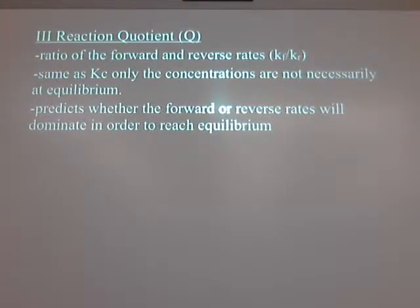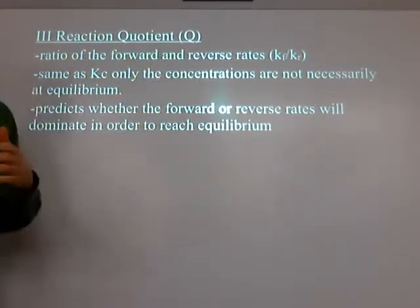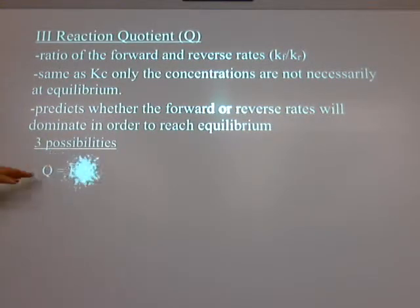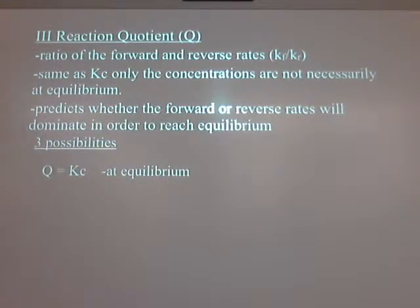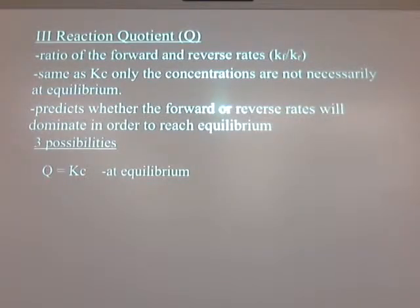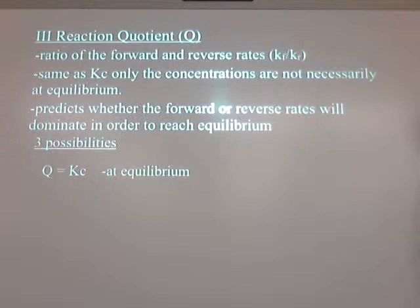All right, so that's basically the notes. Let's talk about the three possibilities of what could happen. Well, the first one's the easiest. Before I write it down here on the board, if I plug my numbers in for the concentration I'm given and it comes out to be Q is the same as Kc, where am I? I'm at equilibrium. So the three possibilities, if Q equals Kc, you know you're at equilibrium.